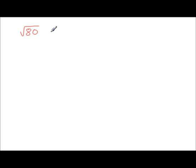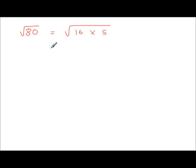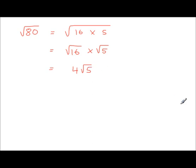The square root of 80 can be simplified. The largest square number that goes into 80 is 16, and 16 times 5 is 80. So root 80 = root 16 times root 5 = 4 root 5. You cannot simplify it any further, so the answer is 4 root 5.